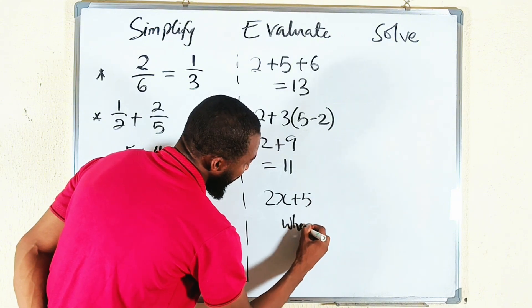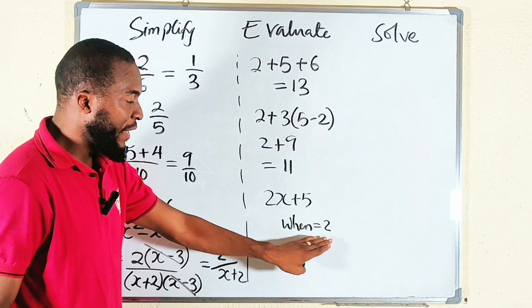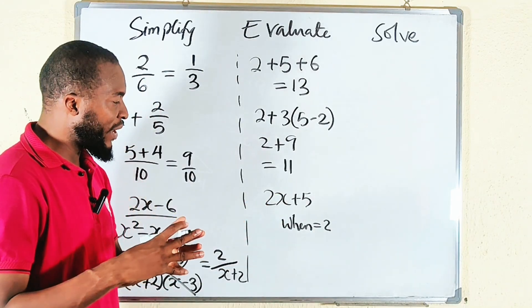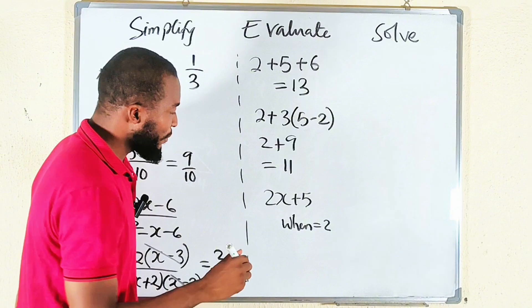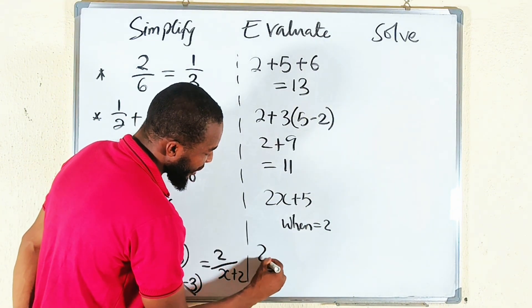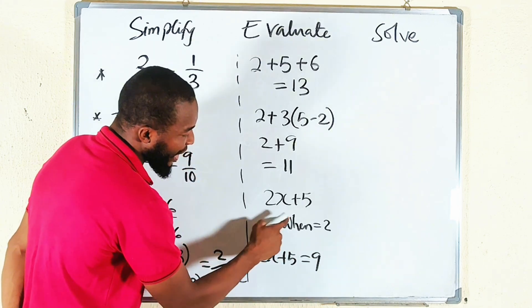To evaluate this expression when x equals 2, you should just take this and plug it there. Simplify to get a single value. So 2 times 2 is 4, plus 5 is 9. So it means that the whole of this, 2x plus 5, is equal to 9 provided x is equal to 2.